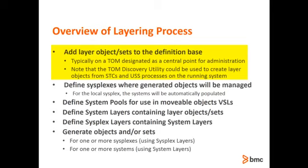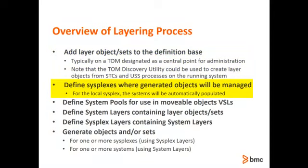Layer objects and sets can be created either from a view such as TOBJ or from the TOM Discovery utility. Next, we define the sysplexes where the generated objects will be managed. If you specify the local sysplex, TOM will automatically specify the systems in that sysplex. Naming a sysplex other than the local will require that you identify the systems in that sysplex. When you define a layer object, you need to specify where it can run.